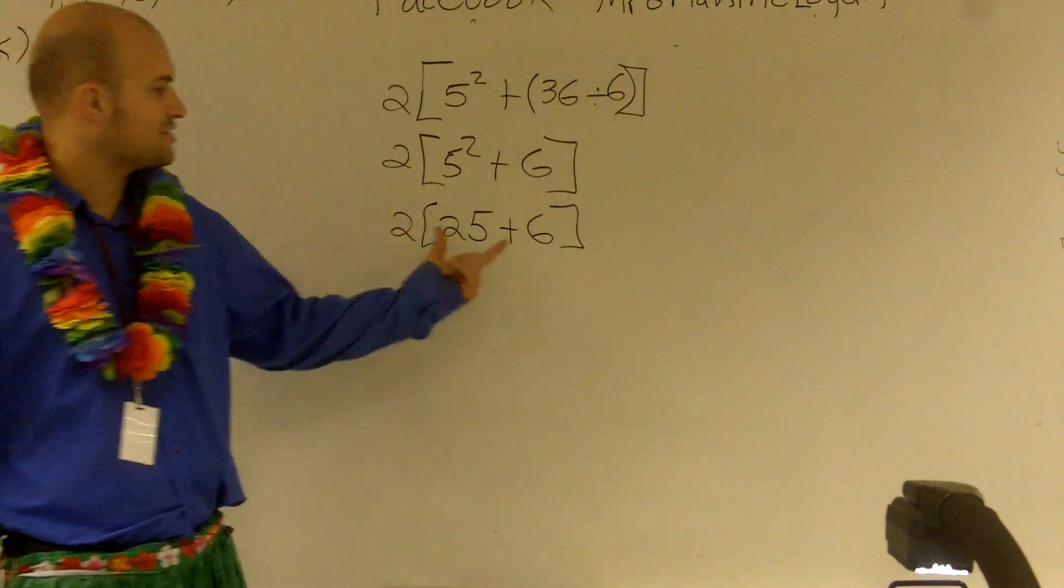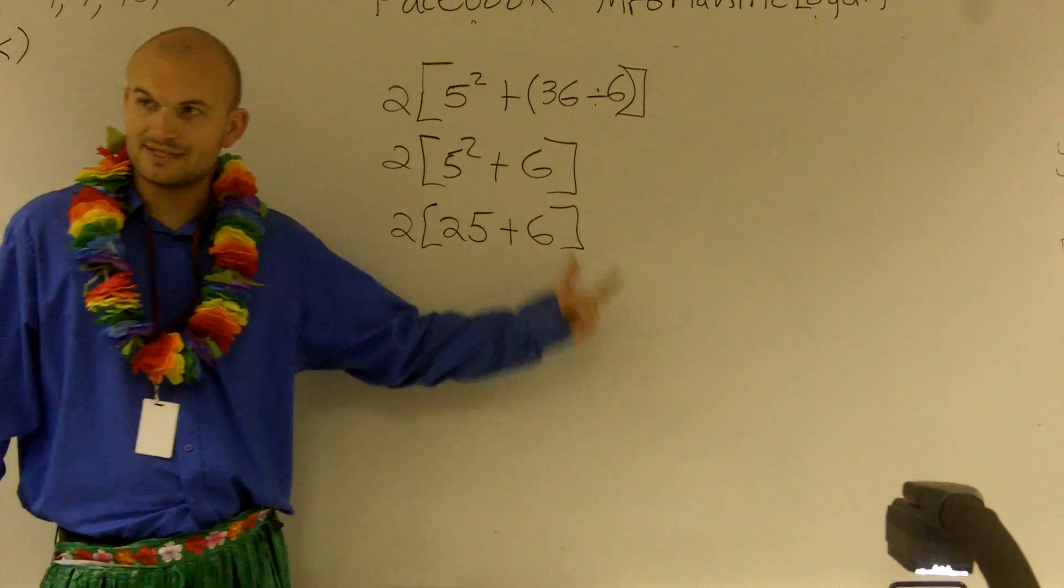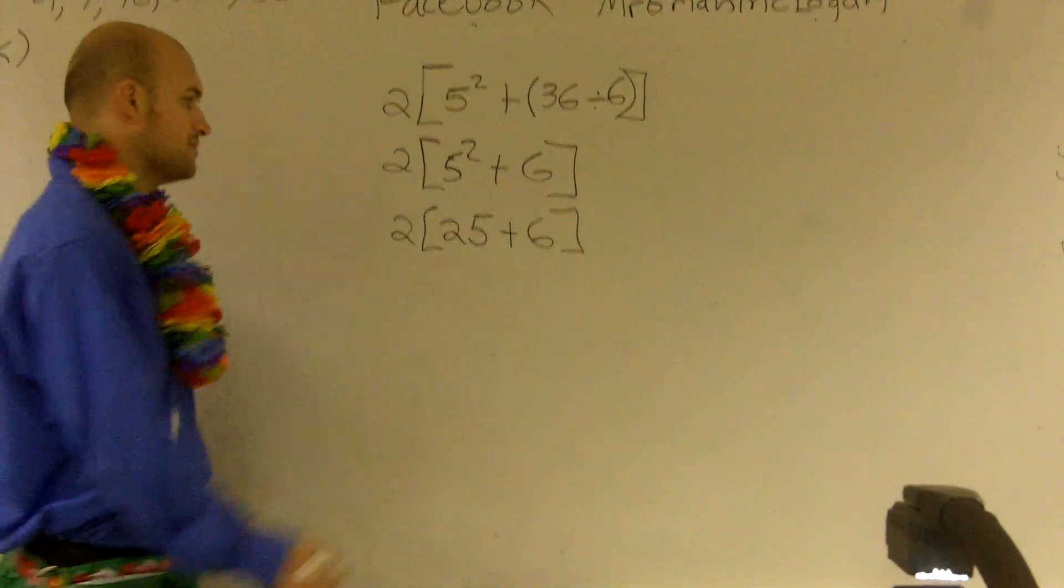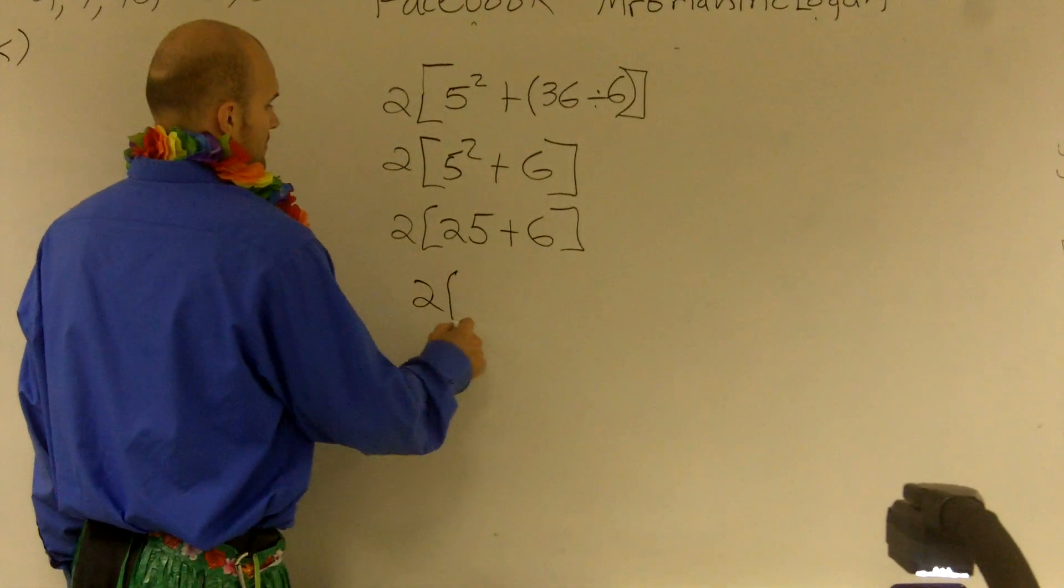Then I need to make sure I continually keep on doing everything inside the parentheses until it's all done. So 25 plus 6 equals 31.